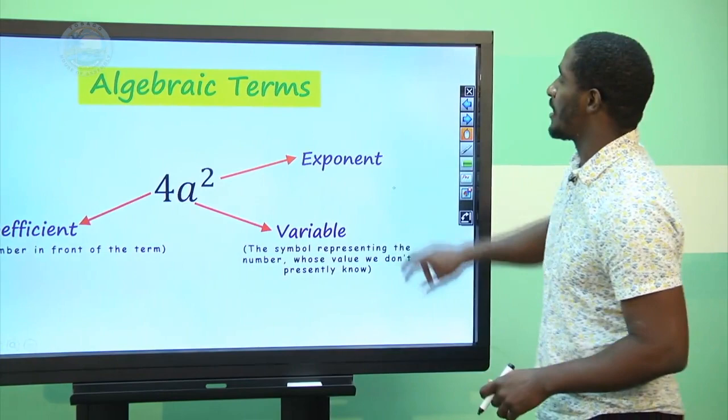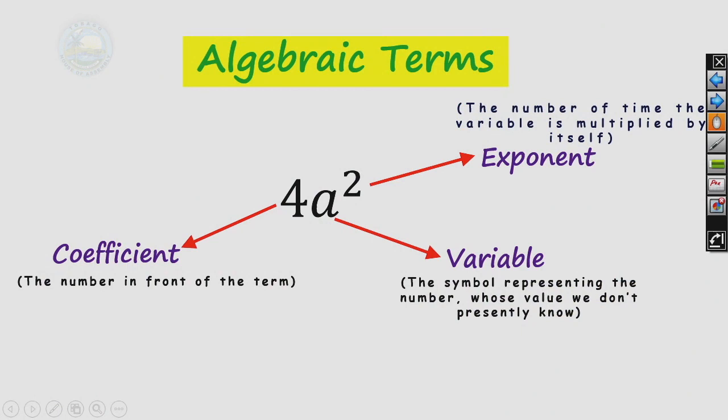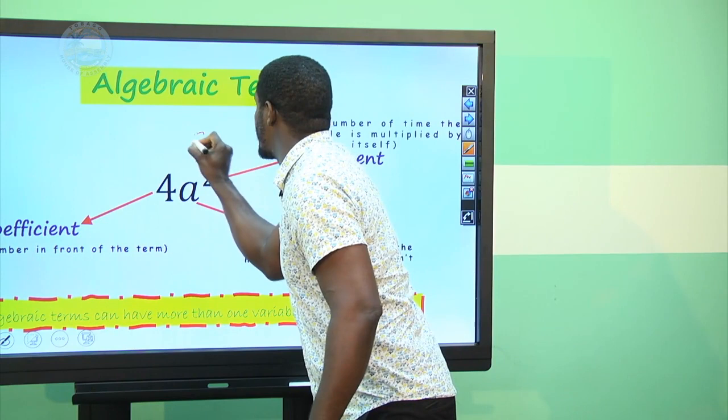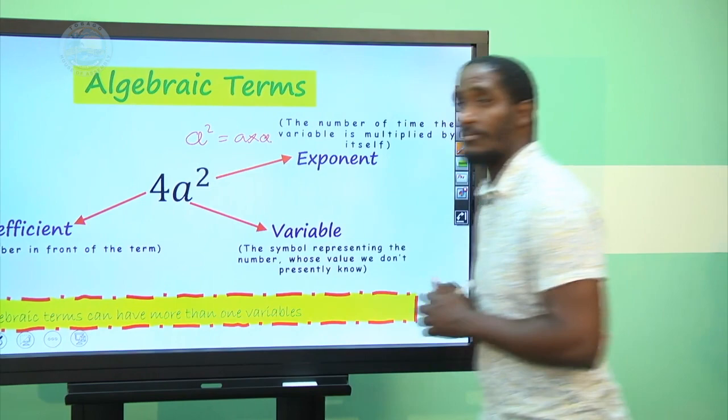Another feature of an algebraic term is the coefficient — the number in front of the term. Once we have written a term in standard form, you are expected to write the number or the constant in front of that term. The other feature is the exponent or power: the number of times the variable must be multiplied by itself. So here, the exponent is 2, meaning A squared is A times A.